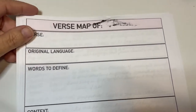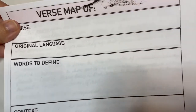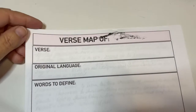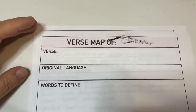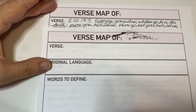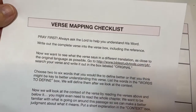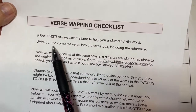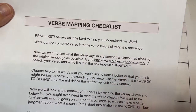This is an example of the verse map form — this one has a little ink smear from the printer, so please ignore that. This is the blank form you can use to do the verse map. I went ahead and filled it out so you don't have to watch me do all that writing. So first, the instructions: here's the verse map checklist, and it always says to pray first, and then it says to write out the complete verse into the verse box, including the reference.